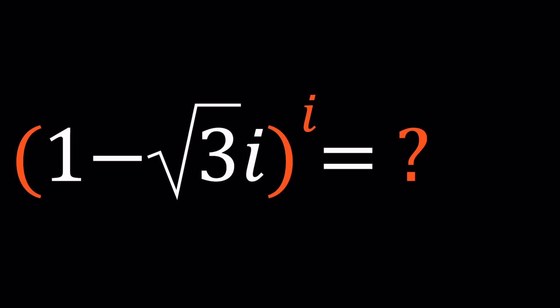Hello everyone, welcome to a plus bi. This channel is all about complex numbers and in this video we're going to be doing something crazy. Take a complex number and raise it to another complex power. So we have 1 minus square root of 3 times i to the power i and we're going to simplify this.